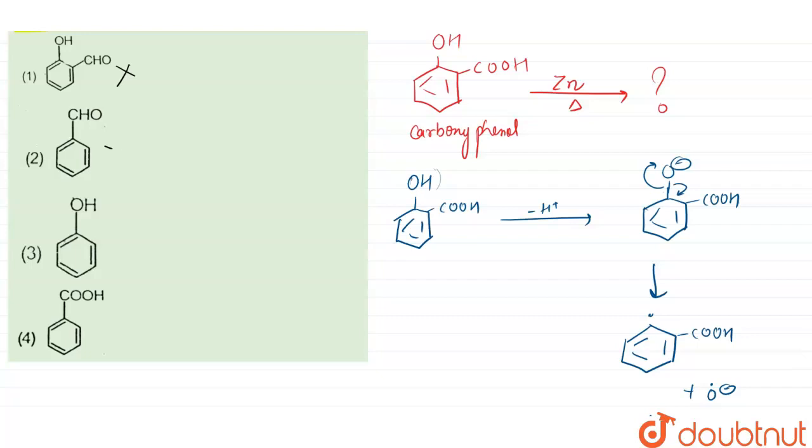Next one is phenol. When Reimer-Tiemann reaction of phenol occurs, it forms salicylic acid but carboxyphenol will never form phenol, so this option is also eliminated.